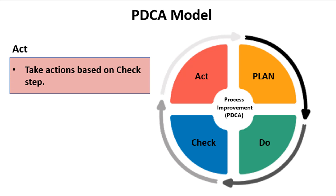If the plan and implementation didn't result in the desired improvement, or if other problems were created, the Act step identifies the root causes of the resulting issues and determines the needed corrective actions. In this case, the cycle is started over by repeating the Plan step to plan the implementation of those corrective actions.